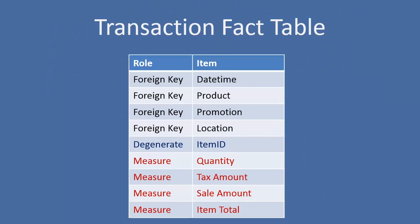Starting out with a transaction fact table — a very simple example. We're looking at a fact table design that would represent the sale of an item, maybe an item sales fact. You can see by the foreign keys that we're at the grain of date, time, product, promotion, location, and then we have a degenerate on item ID.